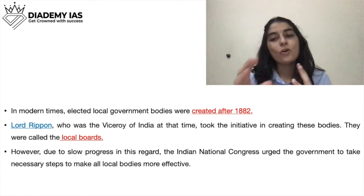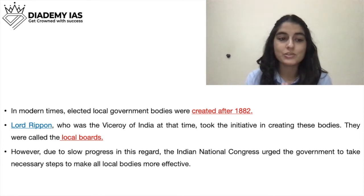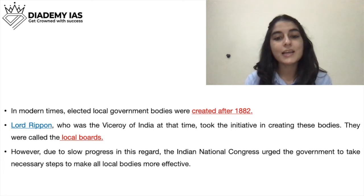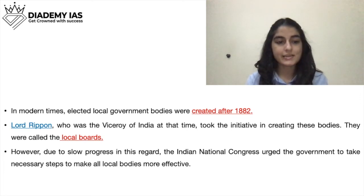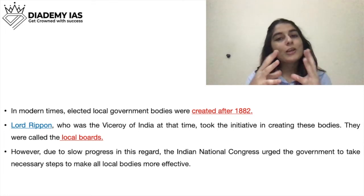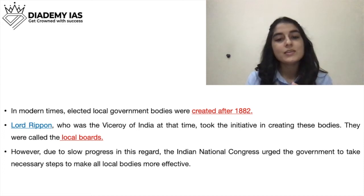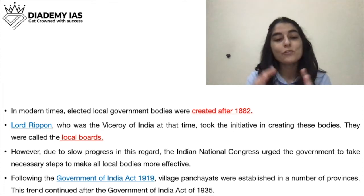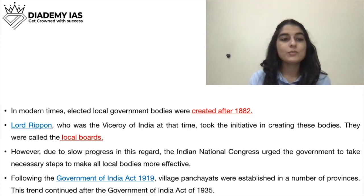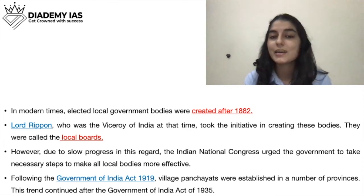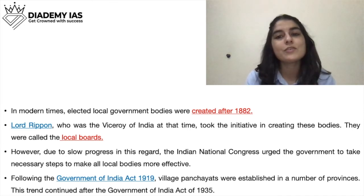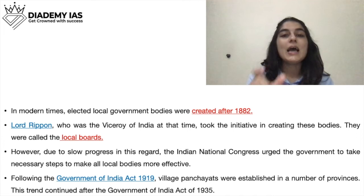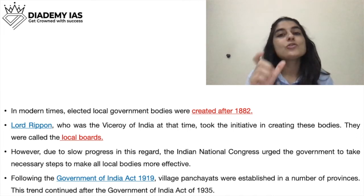Lord Ripon established local governments in many provinces. But due to slow progress, the Indian National Congress urged the government to take necessary steps to make all local bodies more effective — they were created but did not work effectively. This led to the Government of India Act 1919 and Government of India Act 1935, through which panchayats received more functions and powers. In modern India, panchayats became more established.